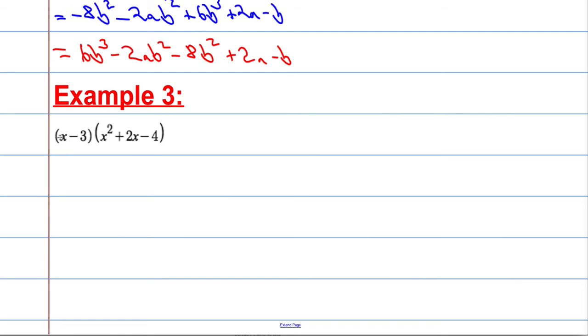We're used to expanding brackets that have two terms by another bracket that has two terms. This type of scenario is not really much different, same idea. I'm going to go first times first gives me x cubed. First times second, so x times 2x is 2x squared. First times third, x times minus 4, minus 4x.